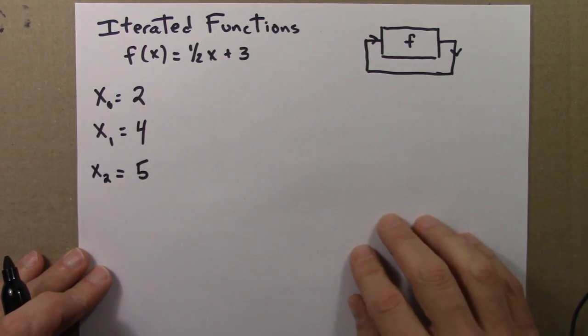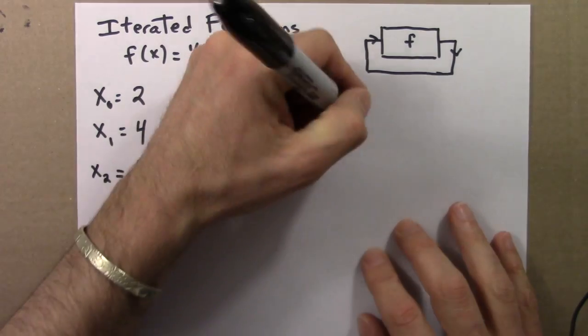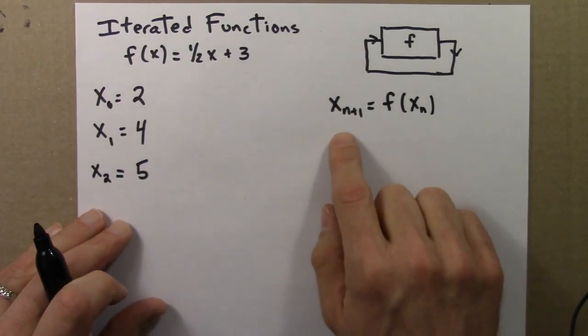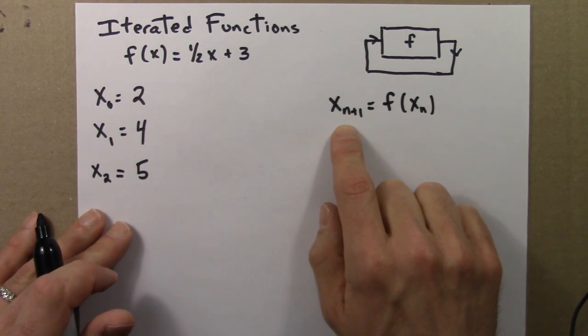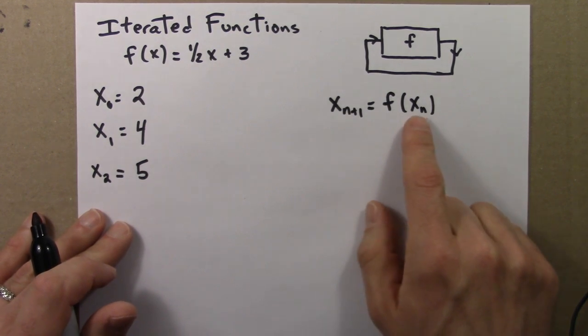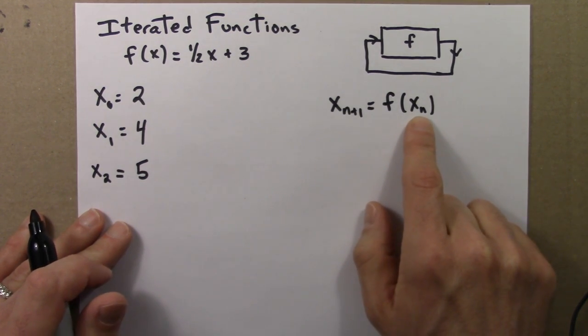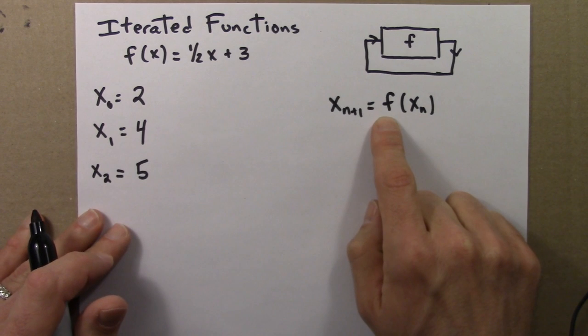Let me write this in a slightly different way. In this notation, this tells me that the next x, the next value in the orbit, is equal to the current value xₙ after the function is applied to it.